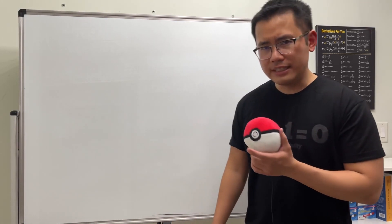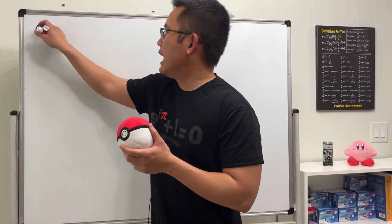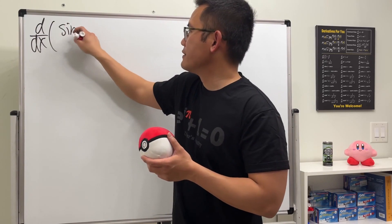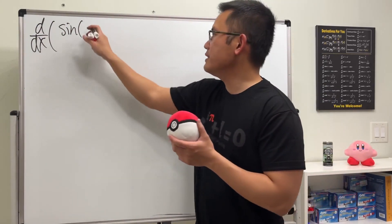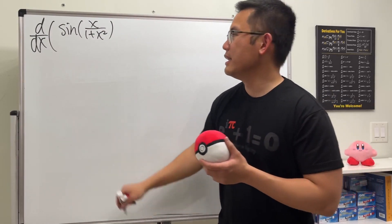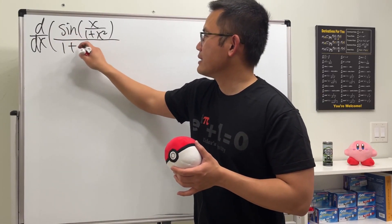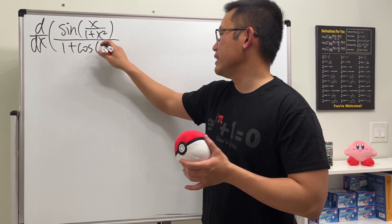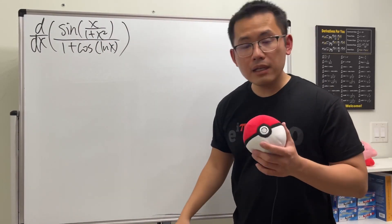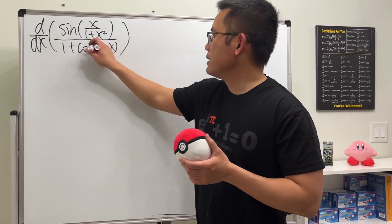One of the easiest ways to be cool in 2022 is to show people that you can differentiate anything. In this video, let's differentiate a quotient rule of a quotient rule. We have the derivative of sine with input x over (1 + x²) on top — that already requires a quotient rule. But one quotient rule isn't cool enough, so let's divide this by (1 + cosine of ln x).